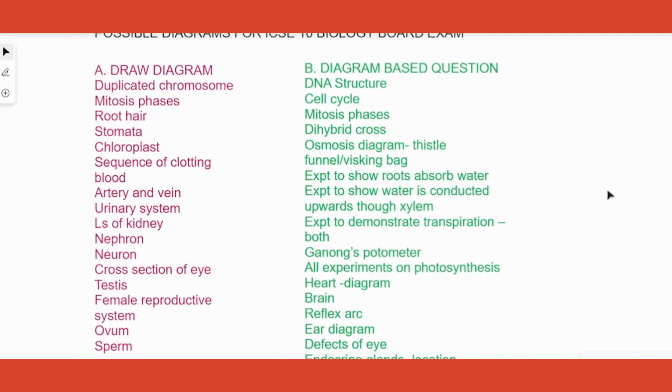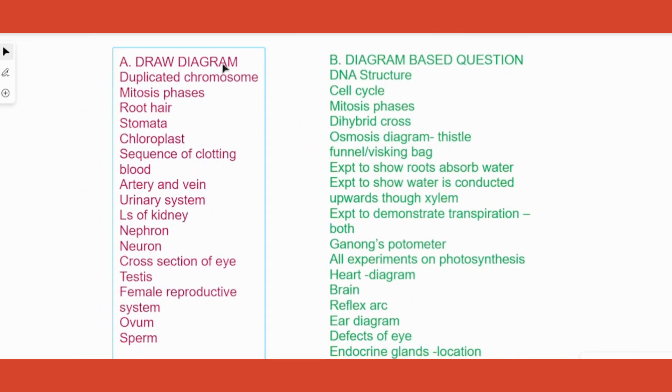Please have a quick look at the draw diagram part. They will ask you to draw duplicated chromosome, any of the prophase, metaphase, anaphase or telophase phases, root hair diagram is a common one, stomata again is a common diagram, chloroplast.